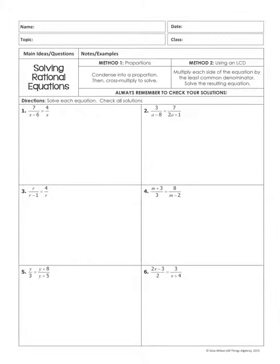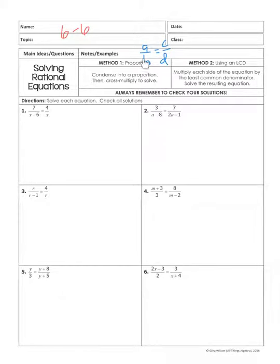Today we are going to look at the final lesson in this unit, lesson 6-6. There are two different methods we could use to solve equations that have fractions in them. Method one is by using proportions. You can only use this method if you have a fraction equal to a fraction — so it might look like A over B equals C over D.